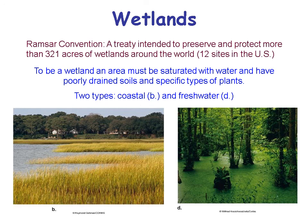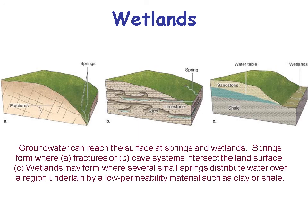Now we'll change subjects and look at wetlands. A wetland is an area saturated with water that has poorly drained soils and specific types of plants. There's a coastal type and a freshwater type. A coastal wetland is an estuary where water is salty or briny but not totally ocean water, with a whole ecosystem built around it. A freshwater wetland is a swamp with specific plants like cypress trees. Groundwater reaches the surface at either a spring or a wetland. A spring forms where fractures or a cave system intersects the land surface, while a wetland forms where small springs distribute water over a region underlain by low-permeability materials such as clay or shale.